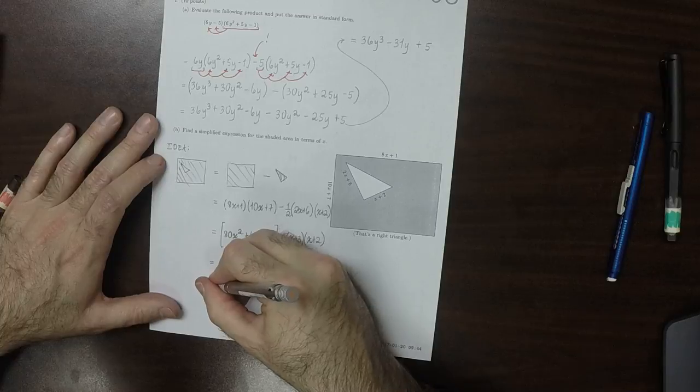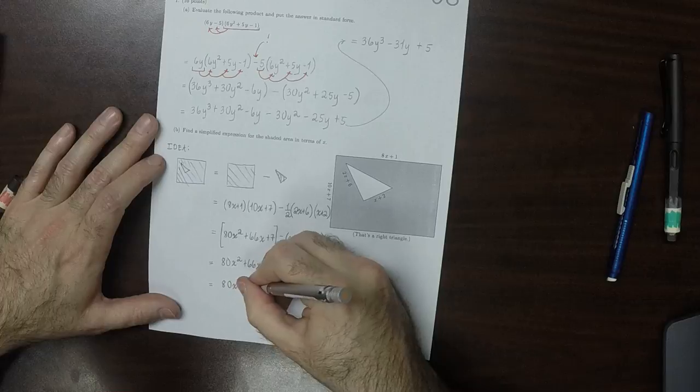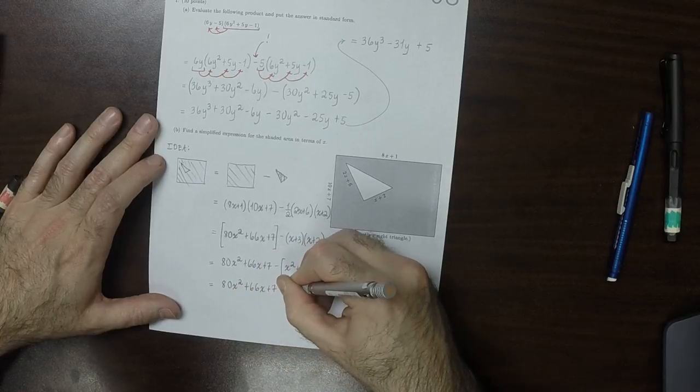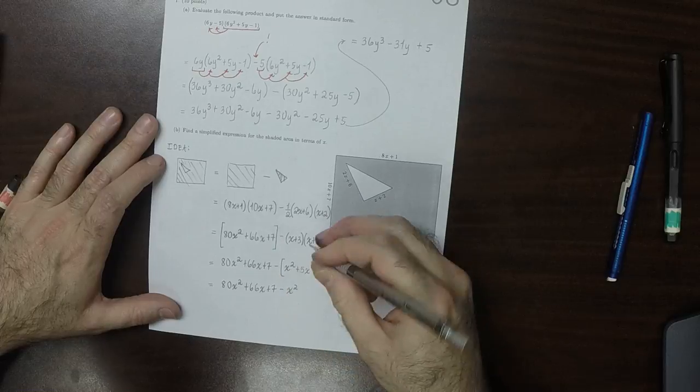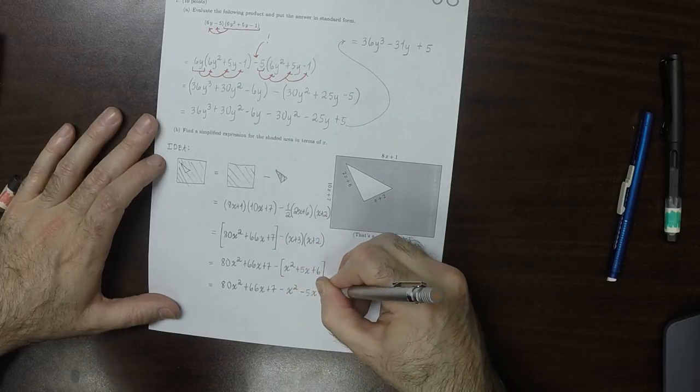Okay, I'll distribute that subtraction now. 80x squared plus 66x plus 7 minus x squared minus 5x minus 6.